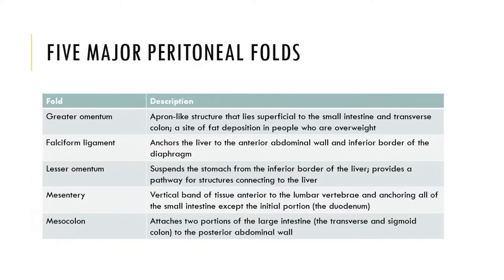There are five major peritoneal folds, and those are called the greater omentum, the falciform ligament, the lesser omentum, the mesentery, and the mesocolon.